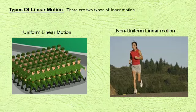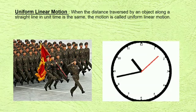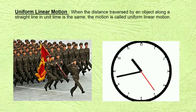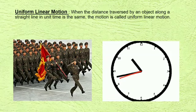Now, there are two types of linear motion: uniform linear motion and non-uniform linear motion. Uniform linear motion: when the distance traveled by an object along a straight line in unit time is the same, the motion is called uniform linear motion. You all might have seen a parade of soldiers on Independence or Republic Day. During that parade, we do not see even a slight difference in their motion. Such motion is uniform linear motion. Another example is the motion of the hand of a clock, because the hand of the clock covers equal distance in equal intervals of time.